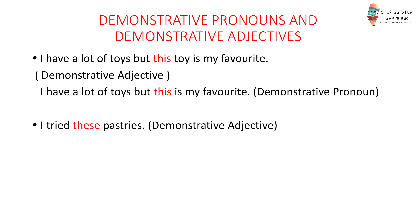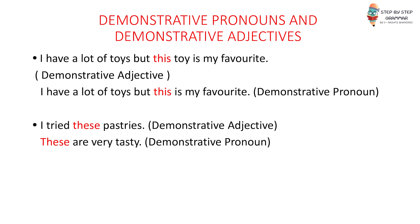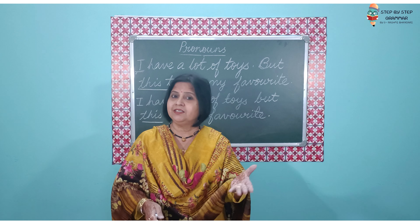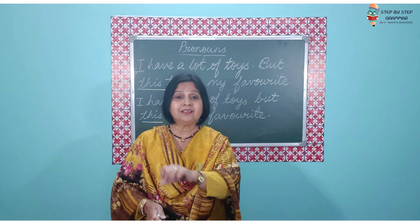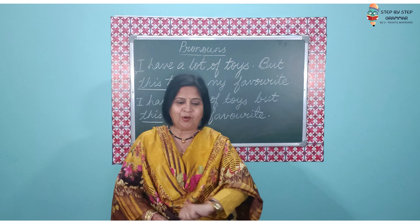For the next example: I tried these pastries. 'Pastries' is a noun — before that I have 'these' — so that's a demonstrative adjective. Or: these are very tasty. Now 'these' could refer to these pastries, these burgers, these pizzas, whatever — but there is no noun. I am just saying these are very tasty. So this time, 'these' is a demonstrative pronoun.